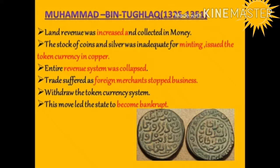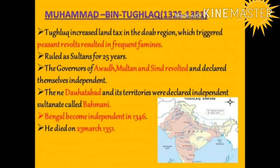When Muhammad bin Tughluq discovered that the stock of coins and silver was inadequate for minting, he issued a token currency in copper. Counterfeiting soon became rampant and the entire revenue system collapsed. Trade suffered as foreign merchants stopped doing business. This forced the Sultan to withdraw the token currency and pay gold and silver coins in exchange, which rendered the state bankrupt. He also increased land tax in the Doab region, triggering peasant revolts and frequent famines.